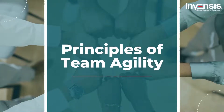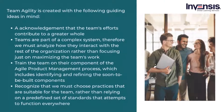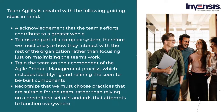Let us understand the principles of team agility. Although team agility describes how teams may do their work most effectively, the focus is not only on the team. Agile should focus on speeding the delivery of business value with predictability, sustainability, and quality. Team agility is guided by: acknowledgement that the team's efforts contribute to a greater whole; recognition that teams are part of a complex system; training the team on their component of the agile product management process; and choosing practices suitable for the team rather than relying on predefined standards.